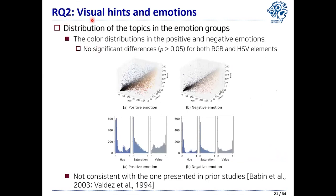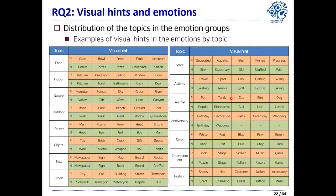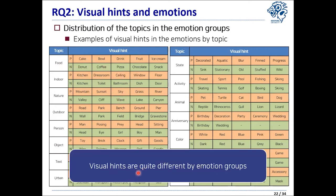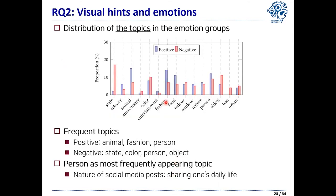RQ2 was about the relationship between visual hints and emotions. We examined the color distribution for each emotion group, and as a result, we did not see any significant differences in colors between the two groups. Another investigation was topic modeling from visual hints in the two emotion groups. This table shows 15 topics and keywords for each topic per emotion group. The keywords are quite different between the two emotion groups, and the frequent topics are somewhat different: the positive group has animal, fashion, and person, while the negative group has state, color, person, and object.